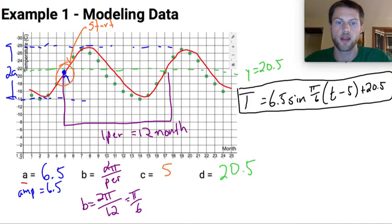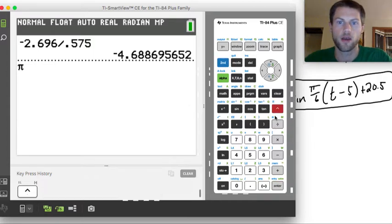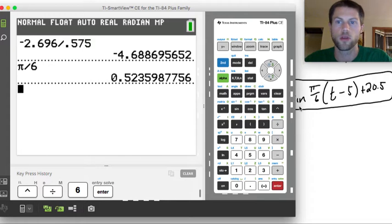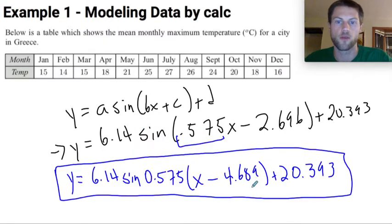Well, if I actually take pi and I divide it by six, let's see what we get here. So that's pi over six. Pretty close, pretty close. And then I have a C value of five and a D value of 20.5. And that's pretty close to what I have from the calculator. So not too bad for doing it by hand.